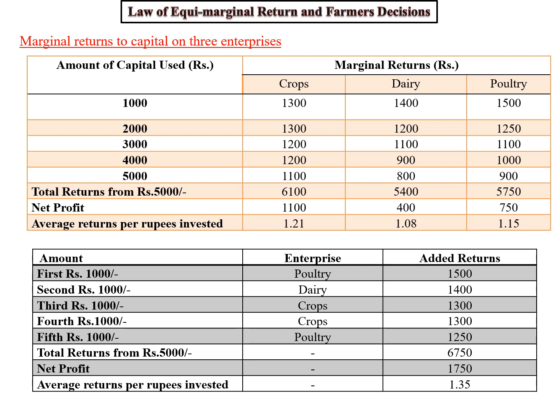Suppose the farmer invests 1,000 rupees — looking at poultry, it has 1,500 rupees as marginal return, so the first choice is poultry. In the second investment of 1,000 rupees, the farmer goes for dairy. In the third choice, the farmer goes for crop. In the fourth choice, the farmer also picks crop. In the fifth investment, the farmer goes again for poultry.